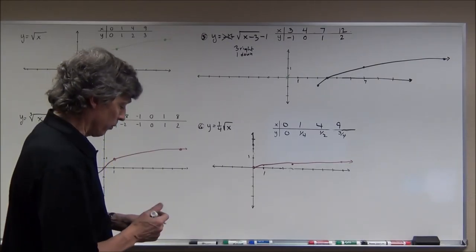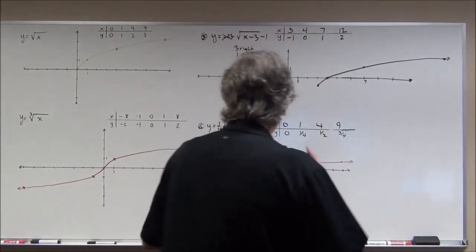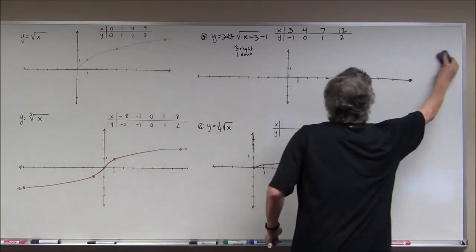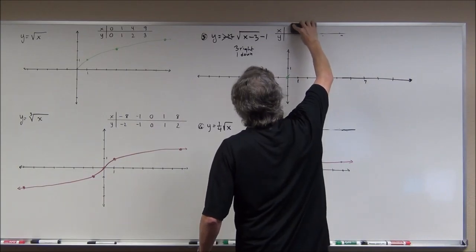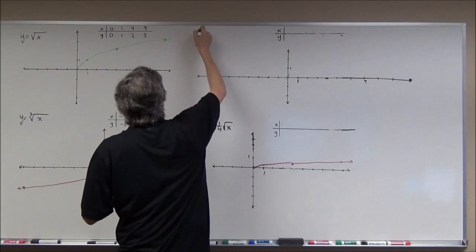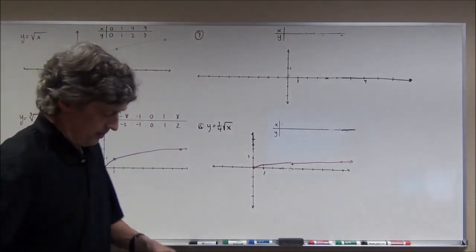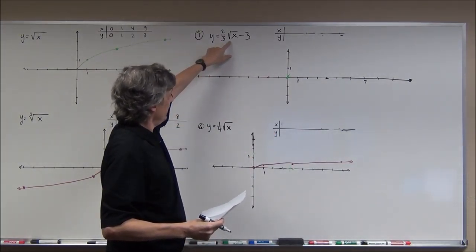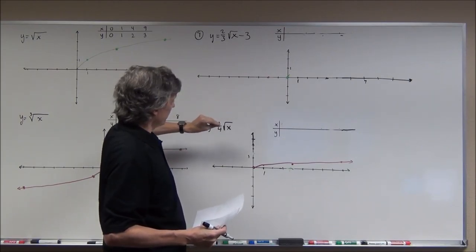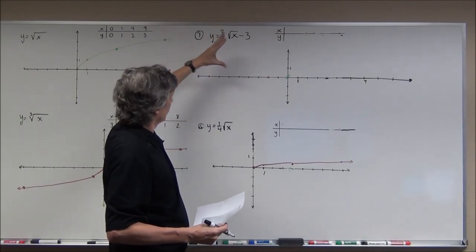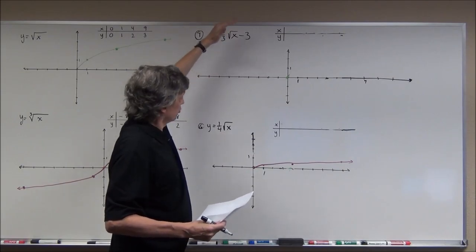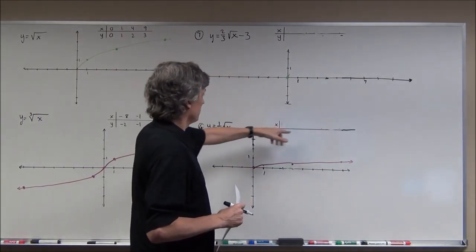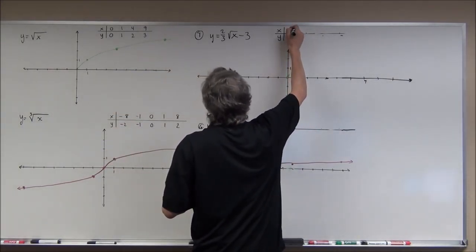That's what the graph looks like. Problem 7: y equals two thirds times the square root of x minus 3. The two thirds is multiplied on the outside, so like the previous problem it's going to squeeze or stretch the graph. Because it's less than one, it will compress it. The minus 3 on the end drops it down 3 units. Using x-values 0, 1, 4, and 9.